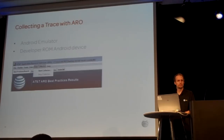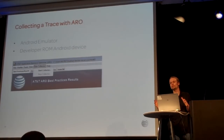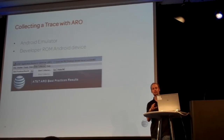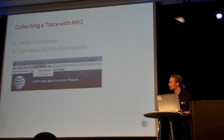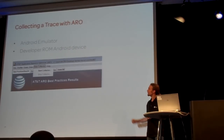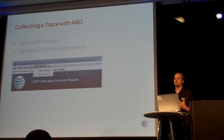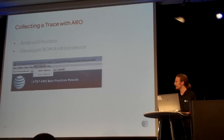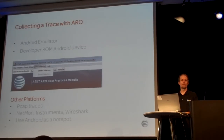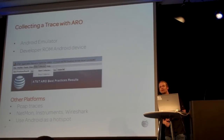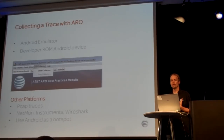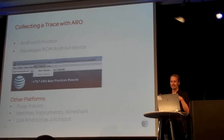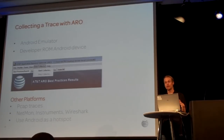Let's start off with running a quick trace. When you're running a trace with Arrow, there are a lot of different ways to do it. You can use the Android emulator on a PC, which is what I'm doing here. You can also take an Android device with a developer ROM, download the APK from our GitHub, install it, and run your test on an actual physical device.